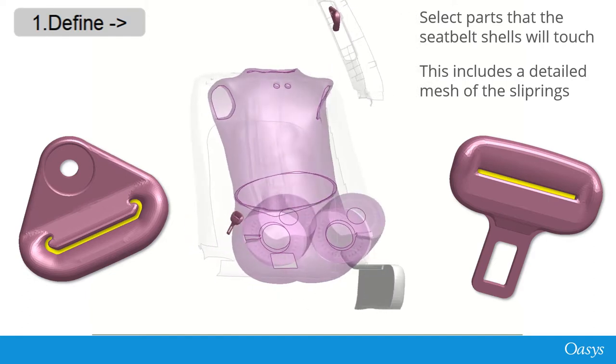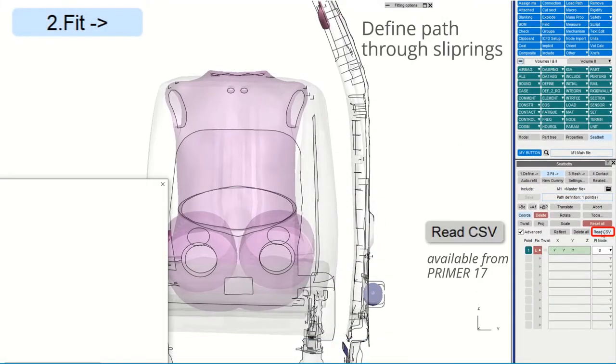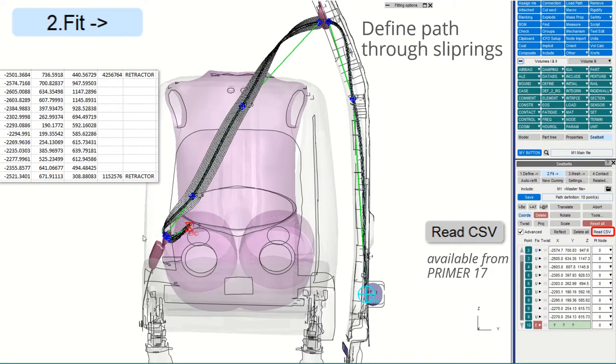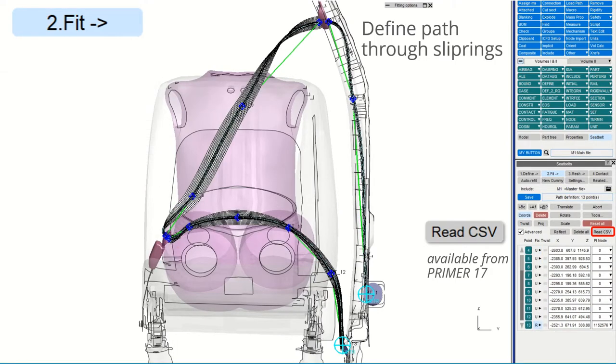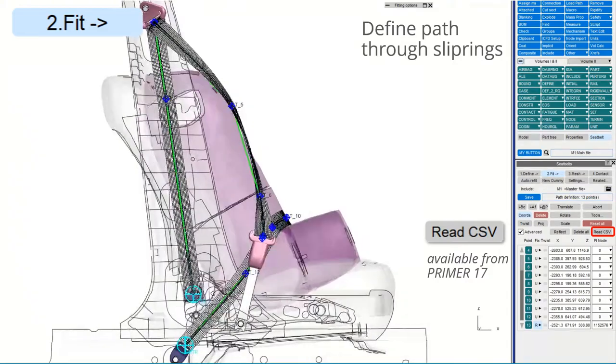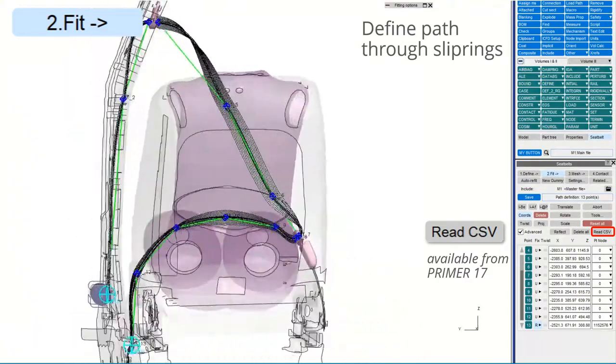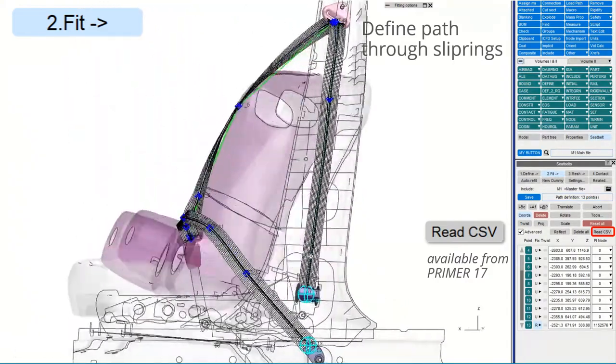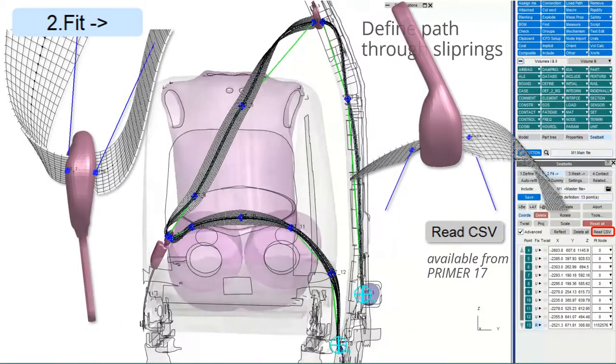The next step is to pick the points that make up the seatbelt path. To save time, I'll read the path points from a CSV file. This function was added in version 17. I've chosen typical points on the structure. But you'll see two points at each slip ring. Making a point either side, like this, helps us steer the belt through each slot.